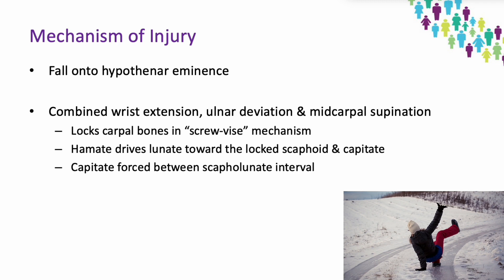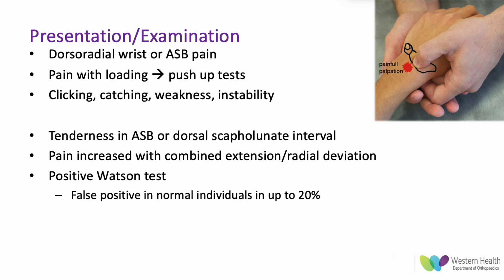Most patients present with dorsoradial wrist pain directly over the scapholunate interval. They have pain with loading — such as pushing up from a chair — and will often describe catching, clicking, and clunking-type symptoms, as well as weakness in grip strength and instability-type symptoms.